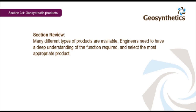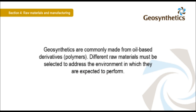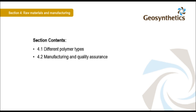Many different types of products are available, and engineers need to have a deep understanding of the function required to select the most appropriate product. Geosynthetics are commonly made from oil-based derivatives — polymers — and different raw materials must be selected to address the environment in which they are expected to perform. This section briefly looks at the different polymer types commonly used in geosynthetic products, and touches on manufacturing and quality assurance aspects.